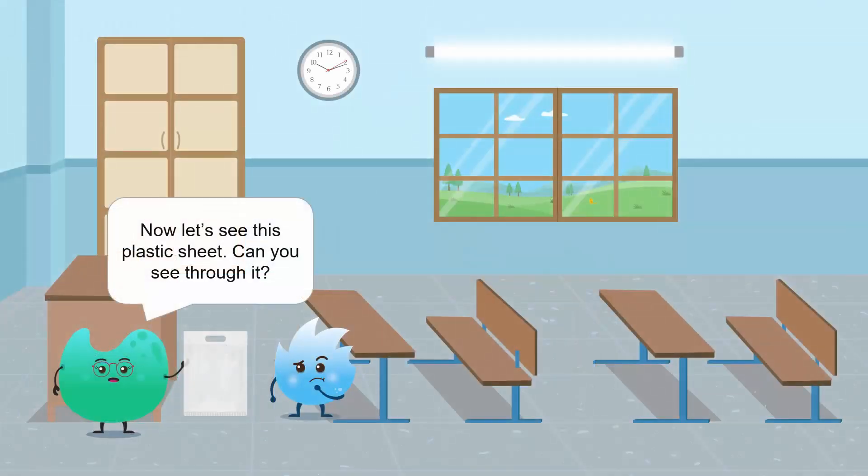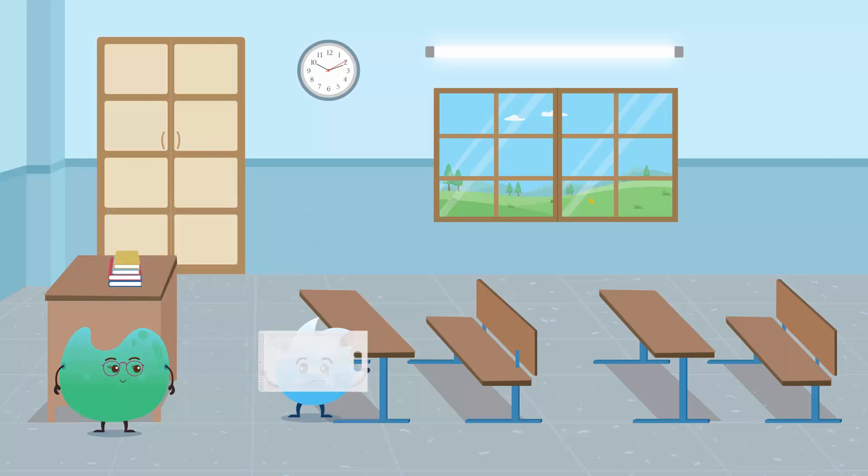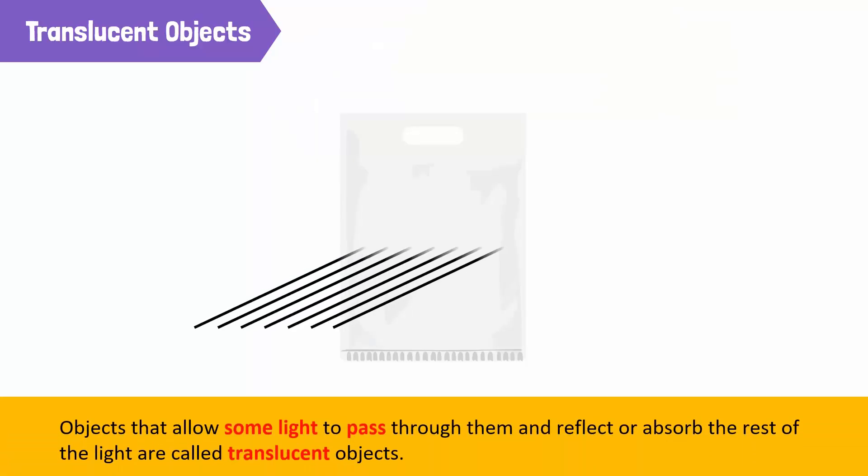Now, let's see this plastic sheet. Can you see through it? I can't see clearly. Everything is blurred. If you look through this plastic sheet, you won't be able to see clearly. Everything is blurred. This sheet is an example of a translucent object. Translucent objects allow some part of the light to pass through them and reflect or absorb the rest of the light. Therefore, we cannot see clearly through them.